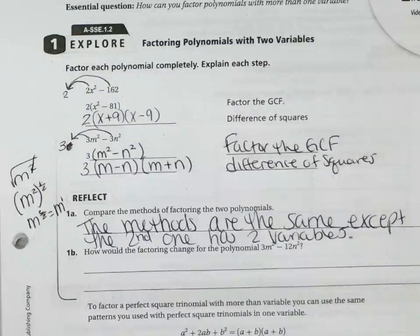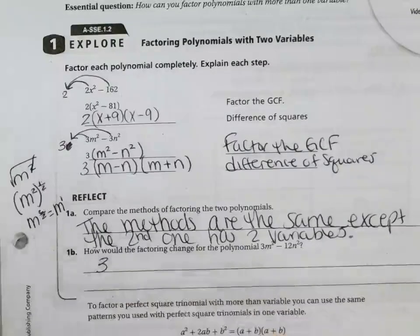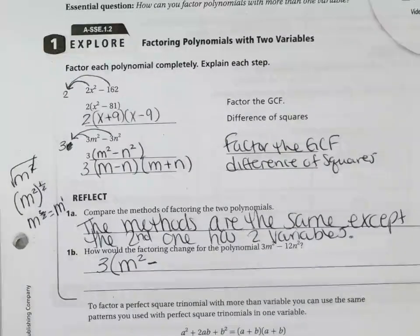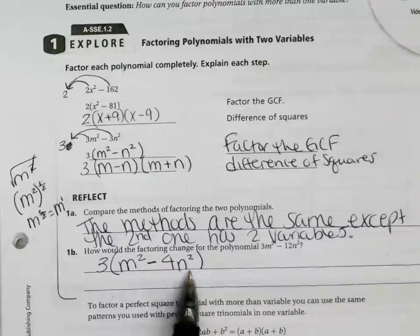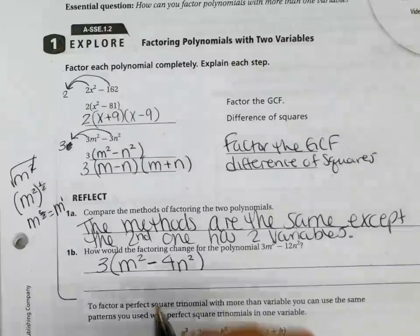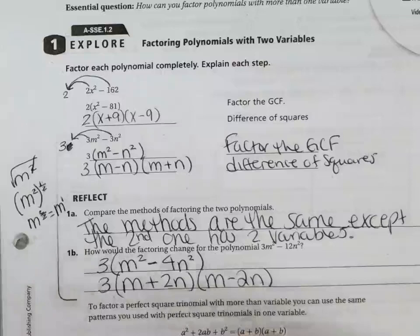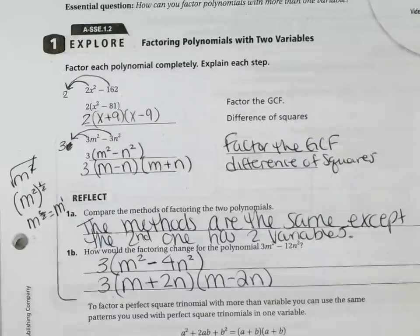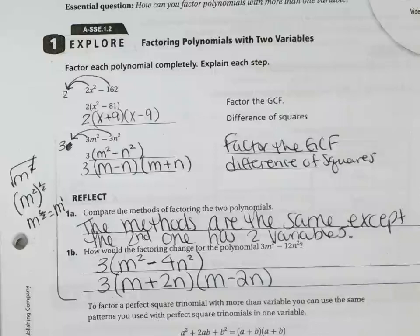How would the factoring change for the polynomial 3m squared minus 12n squared? So what are you going to pull out with the 3 and the 12? What's in common? 3. And then m squared and n squared. There's nothing you can do. So it would be 3 times m squared minus 4n squared. Now what? Are these differences of squares? Is this a perfect square and a perfect square? And they're being subtracted. So m plus 2n, m minus 2n. Why did I do a 2? Because the square root of 4 is 2 and the square root of n squared is n.